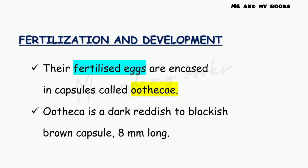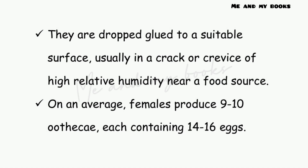Regarding fertilization and development, the fertilized eggs are encased in capsules called oothecae. An ootheca is a dark reddish to blackish brown capsule, about 8 mm long. They are dropped and glued to a suitable surface, usually in a crack or crevice of high relative humidity near a food source. On average, females produce 9 to 10 oothecae, each containing 14 to 16 eggs.